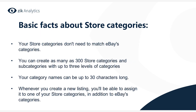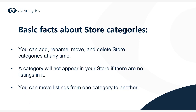Let's go over some basic facts about store categories. Your store categories don't need to match eBay's categories. You can create as many as 300 store categories and subcategories with up to three levels. For example, your main store category could be shoes, and underneath that you have men's shoes, women's shoes, kids' shoes, and so on. Your category names can be up to 30 characters long. Whenever you create a new listing, you can assign it to one of your store categories in addition to eBay's categories. You can add, rename, move, and delete store categories at any time.